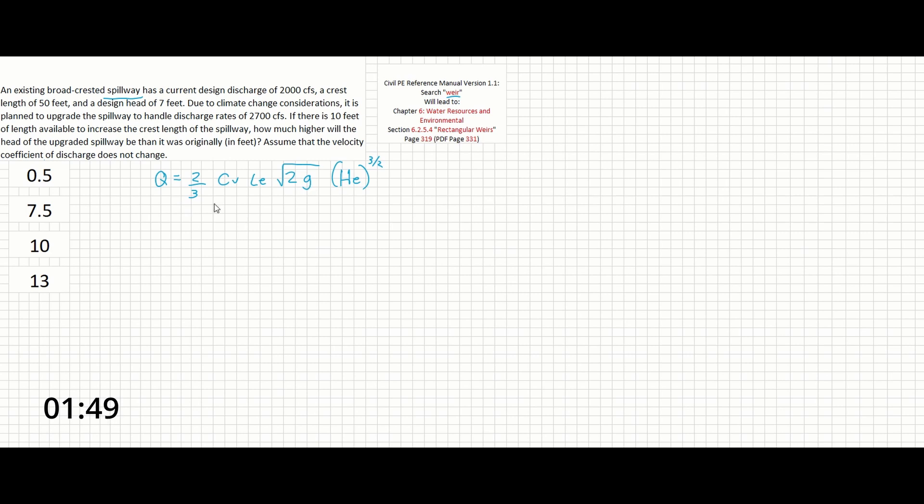So if we write down our knowns in this equation, we can see that only one term is missing, and that's going to be CV. So let's first solve for CV using the initial conditions of the spillway.